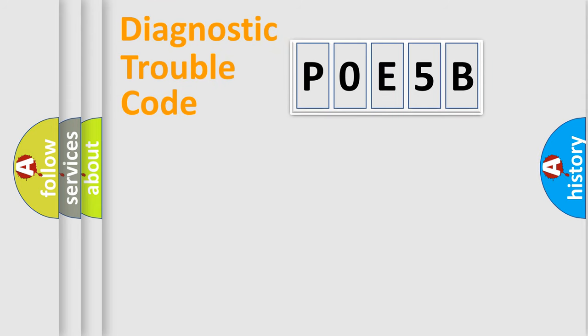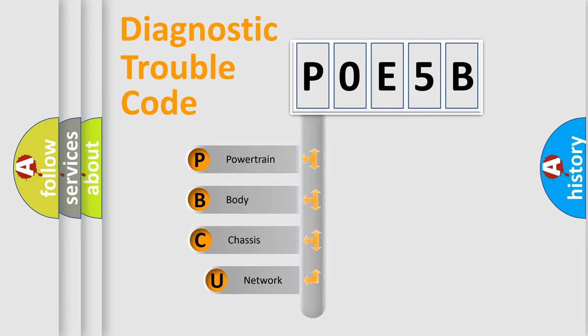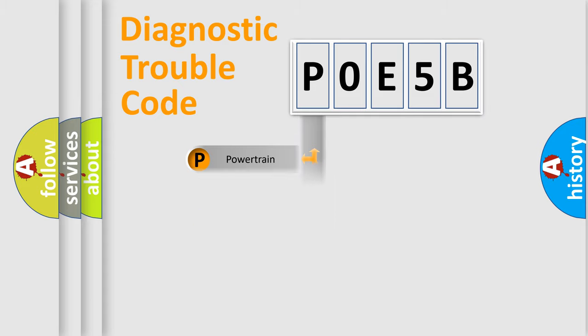First, let's look at the history of diagnostic fault code composition according to the OBD2 protocol, which is unified for all automakers since 2000. We divide the electric system of automobile into four basic units: Powertrain, Body, Chassis, Network. This distribution is defined in the first character code.